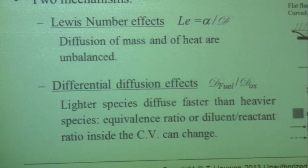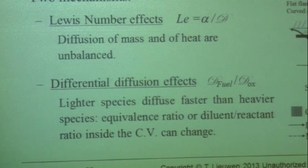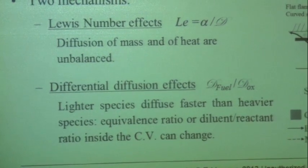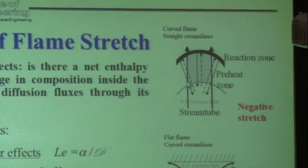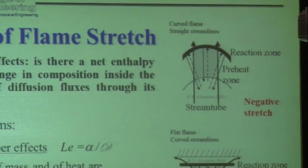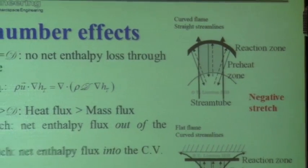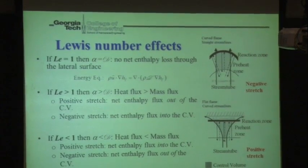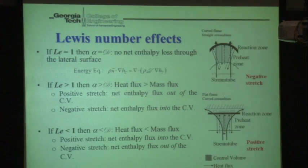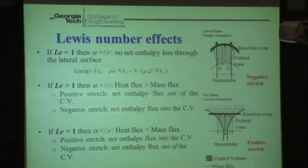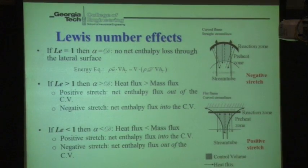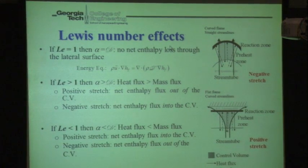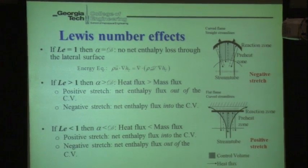Another example would be if your reactants were hydrogen and propane — you have a certain hydrogen-propane ratio, and you can imagine that the ratio of hydrogen and propane going into your control volume can change because propane is not so diffusive and hydrogen is very diffusive. We're going to now tick through Lewis number effects and then differential diffusion effects. We already talked about Lewis number effects: if the Lewis number is one, meaning thermal diffusivity and mass diffusivity are the same, then although these diffusive fluxes are misaligned, there's no net enthalpy loss from your control volume.